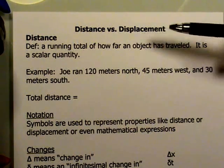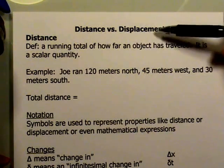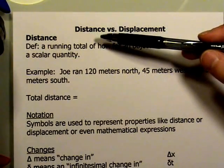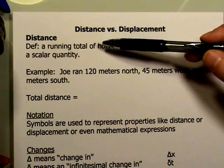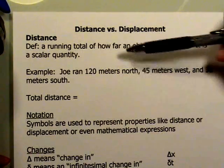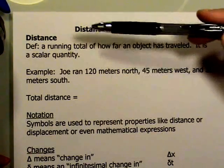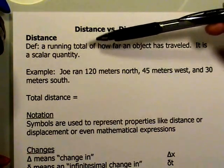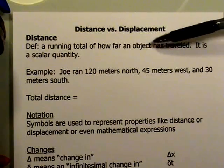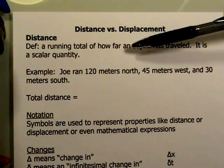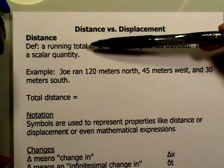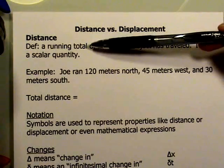Closely related to the concept of displacement is the idea of distance. They measure the same length and use the same units — kilometers, meters, centimeters, and so on. The difference with distance, though, is that distance is a running total of how far an object has traveled. It's not a vector quantity; it's a scalar quantity. It doesn't care whether you went north, south, east, or west.